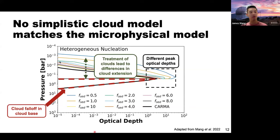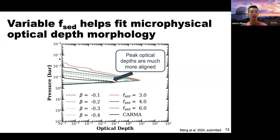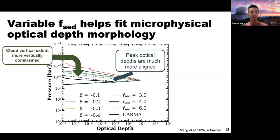All of the f_sed profiles shown here are constant — the same value from the top to the bottom of the atmosphere. We can actually better improve the model using a variable f_sed prescription from Brünion 2022, which helps match the optical depth profile of the microphysical CARMA model. The dashed lines represent variable f_sed models where the f_sed value at the top is 3, and with a negative beta value — the best fit of minus 0.1 — it grows to a larger f_sed value by cloud base. This brings the peak optical depths much more aligned to CARMA, and the vertical extent is a lot closer to the CARMA model.